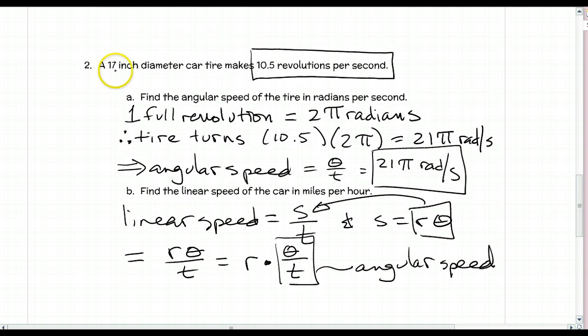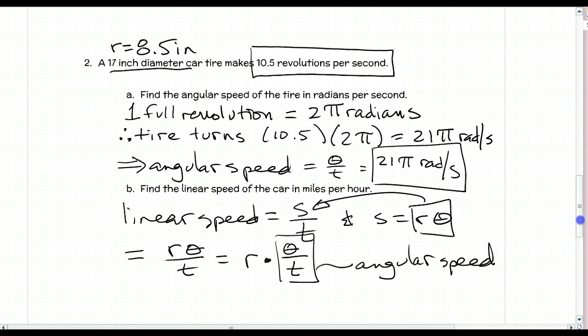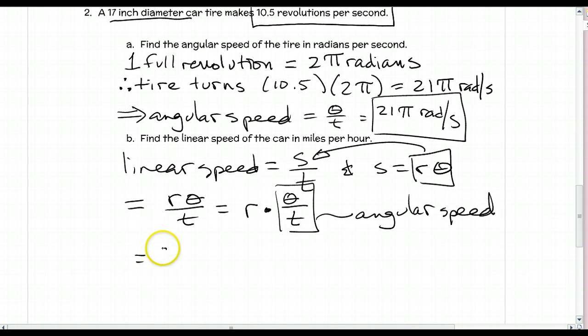Linear speed is the radius times angular speed. The diameter was 17 inches, so radius is 8.5 inches. We have 8.5 times 21π, which equals about 560.77 inches per second.